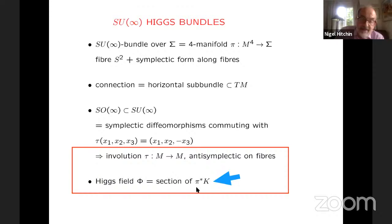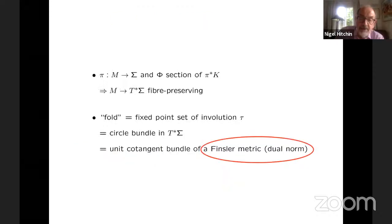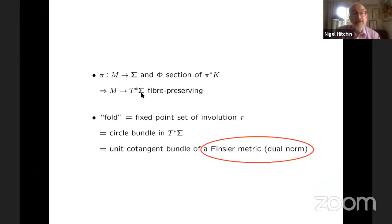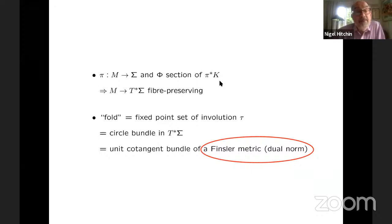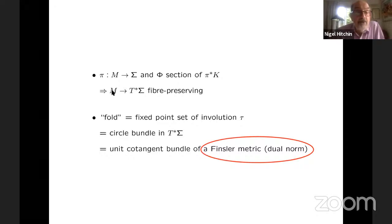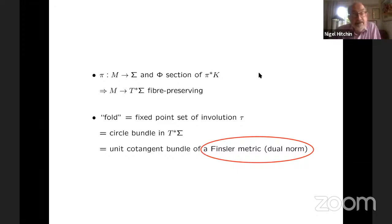So the point is this: the Higgs field is a section of the pullback of the canonical bundle — but what is that? That's basically a map from M into the total space of the canonical bundle — a fiber-preserving map. But M has this fold; each two-sphere inside M has this involution, which means that only the quotient by the involution has its image going into T*Sigma. So in particular, the fold — this circle bundle — goes into a circle bundle inside the cotangent bundle. And what is that? We can think of that as the unit cotangent bundle of a Finsler metric.